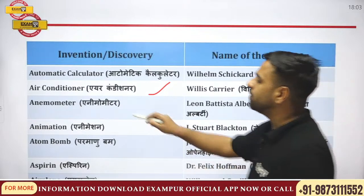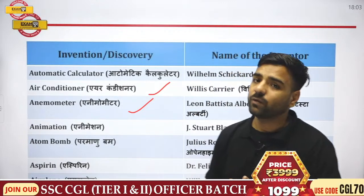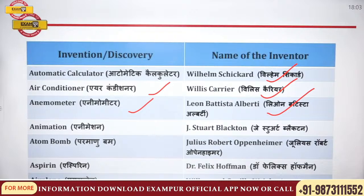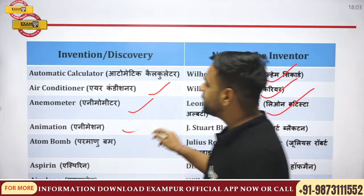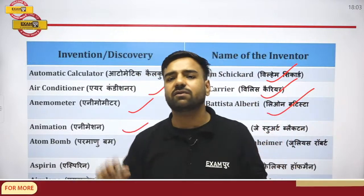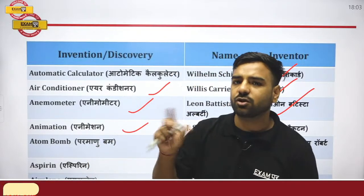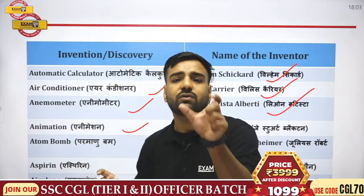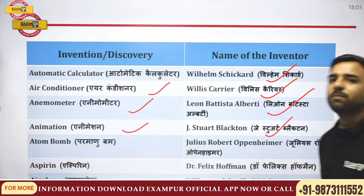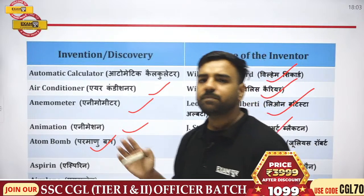Anemometer is a device which helps in measuring wind speed; it was discovered by Leon Alberti. Next, talking about animation — if I talk about cartoons, the name was Stuart Little. From Stuart Little, I take the word 'Stuart,' so for animation the discoverer was J. Stuart Blackton.